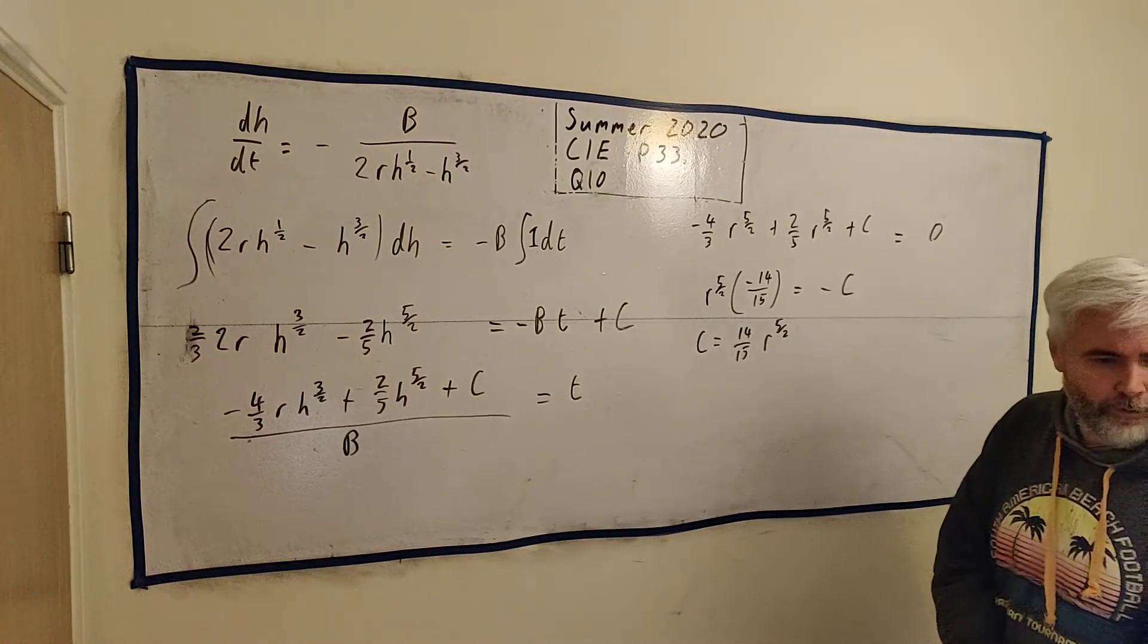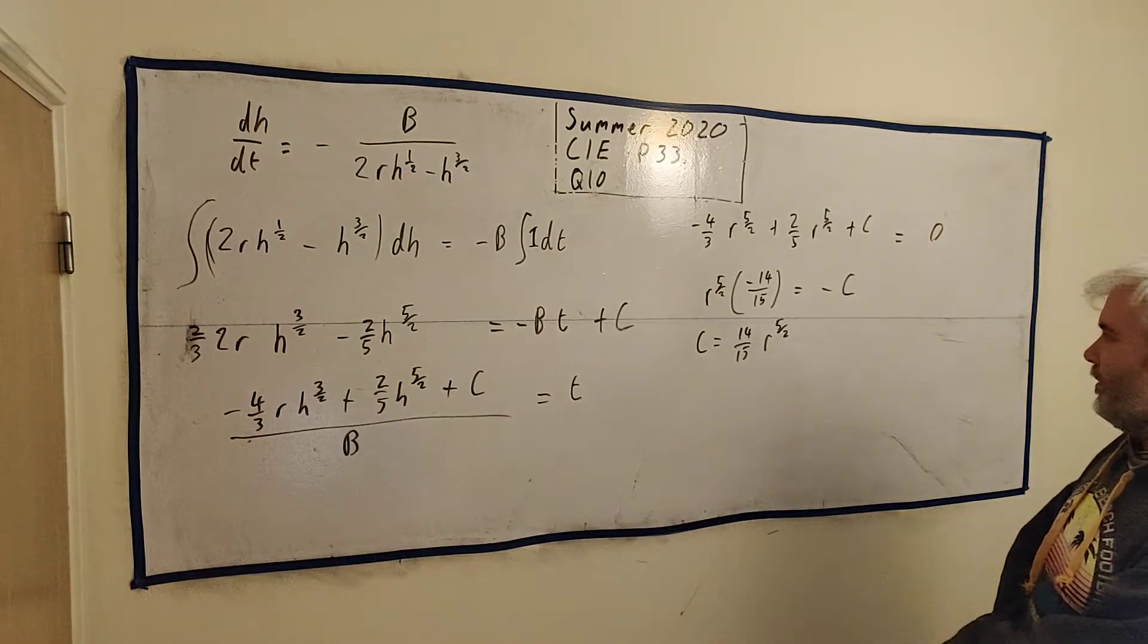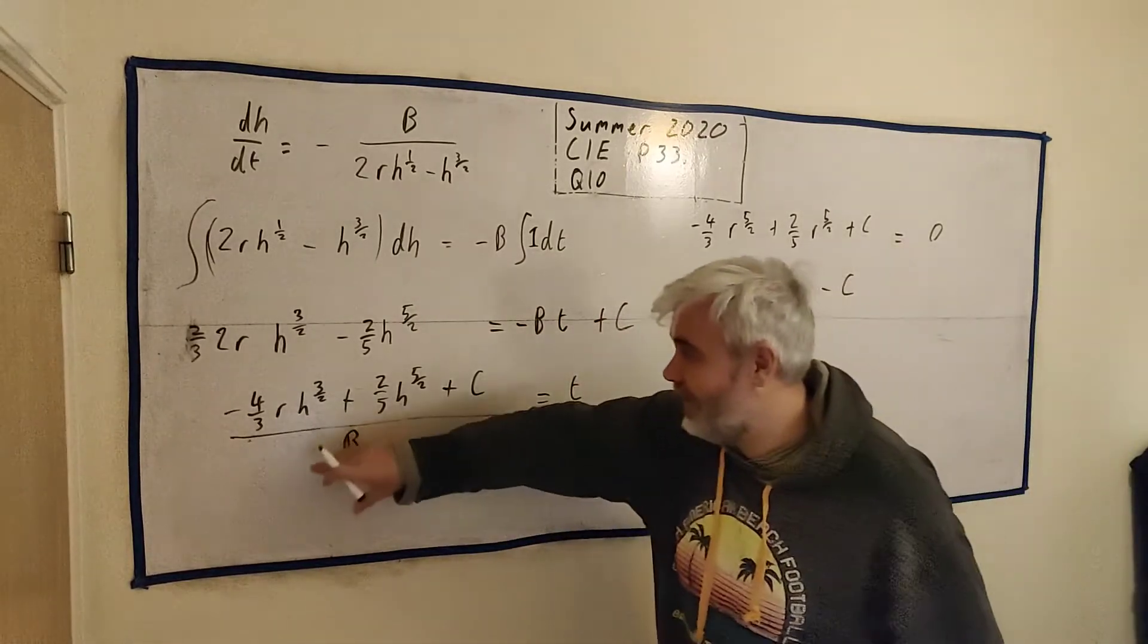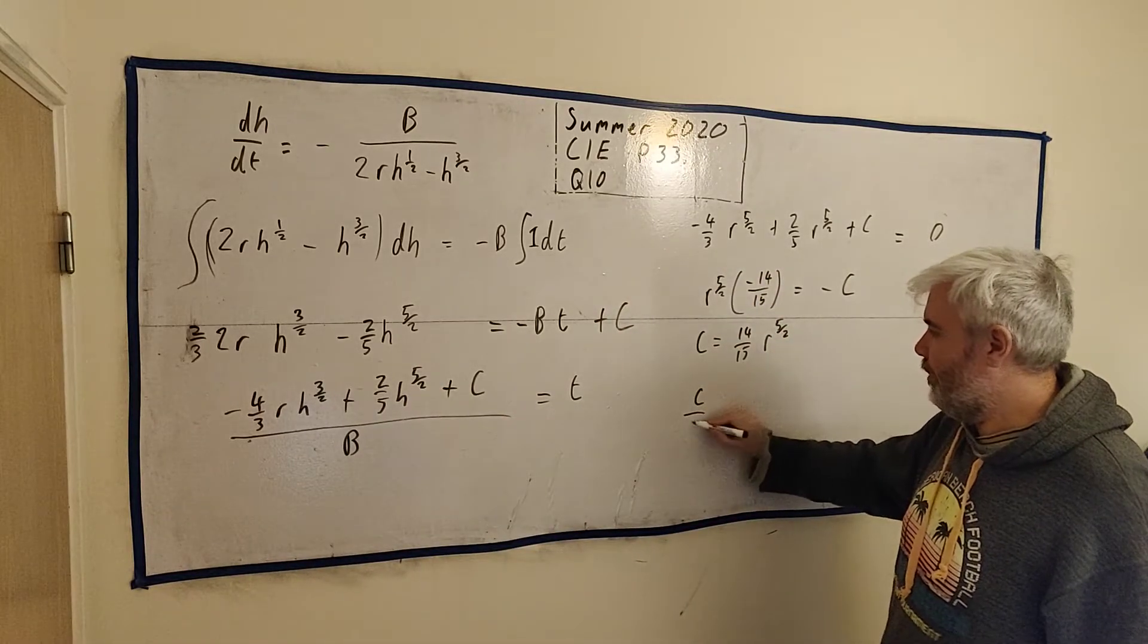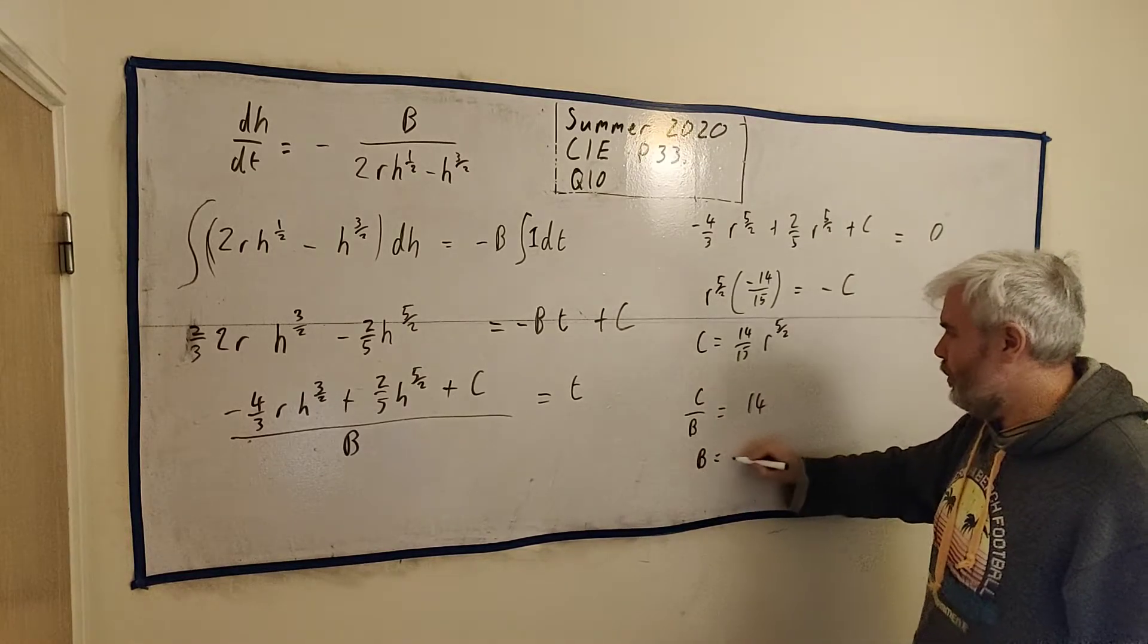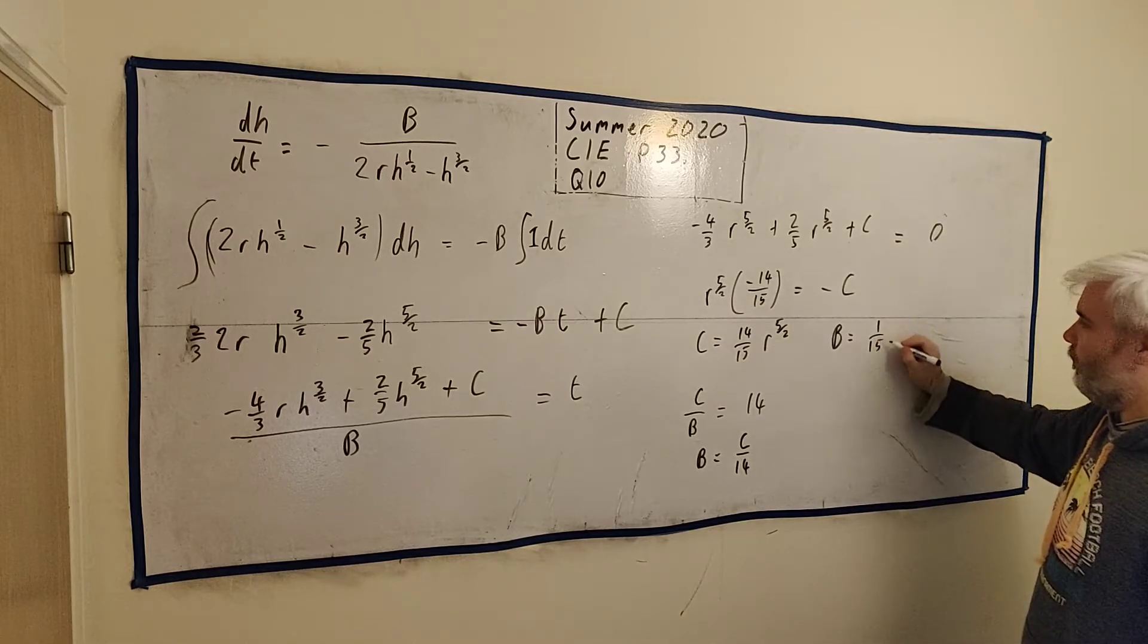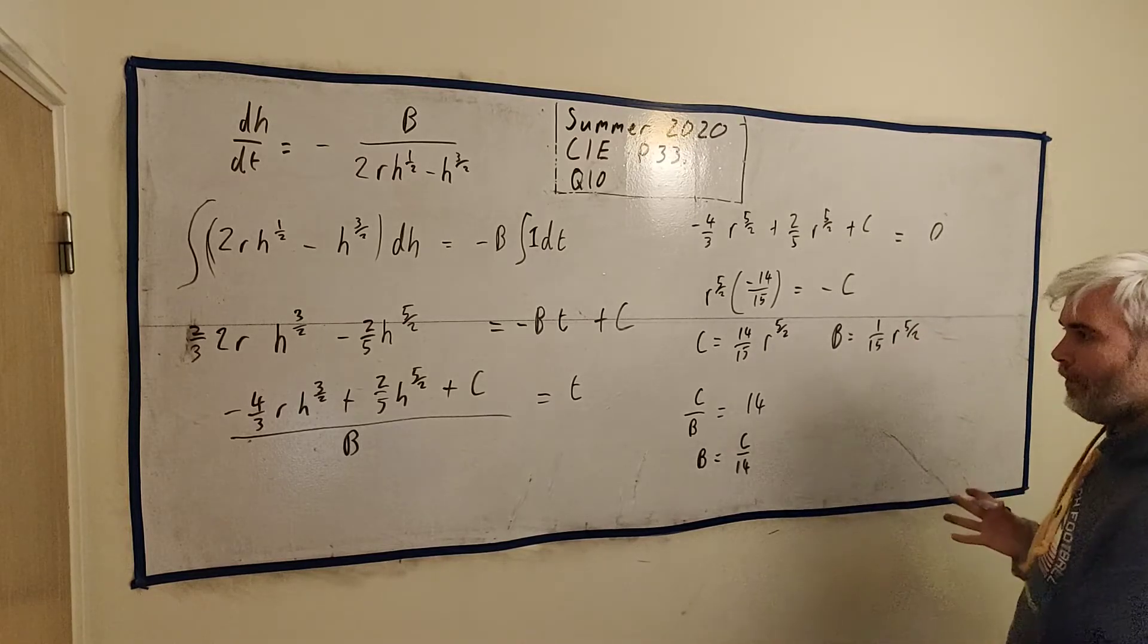So the r to the power of 5/2 is in both of them, so we can take that outside. So it's really just 2/5 minus 4/3. I'd suggest doing that in a calculator, but we can put them both into 15ths. And that's 6 fifteenths take away 20 fifteenths. So that's minus 14 fifteenths is equal to minus c. Change the two minuses. That just tells us that c is equal 14 over 15 r to the power of 5/2. And then for b, we know when the tank is empty, that's when h is equal to 0, time is equal to 40. So let's put that in. 0, that's gone. 0, that's gone. We're just left with c divided by b is equal to 40. That means b must equal to c divided by 40. That means b must equal to this divided by 40, which is 1 over 15 r to the 5/2.